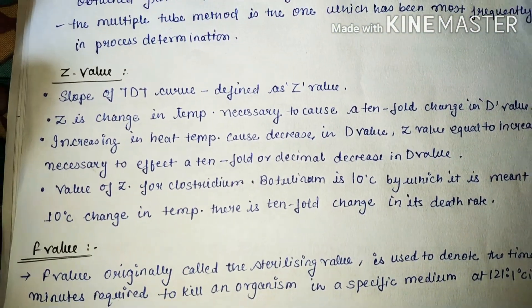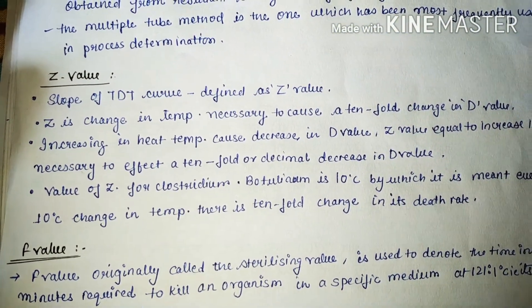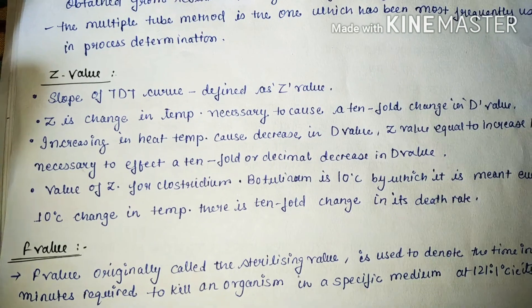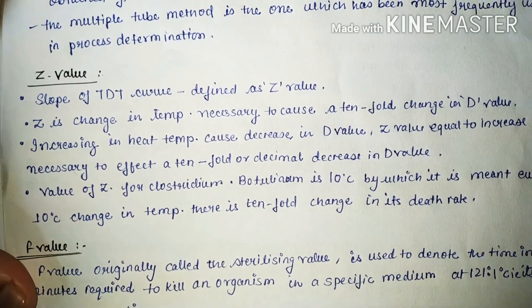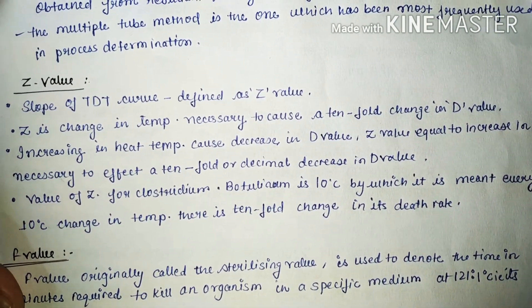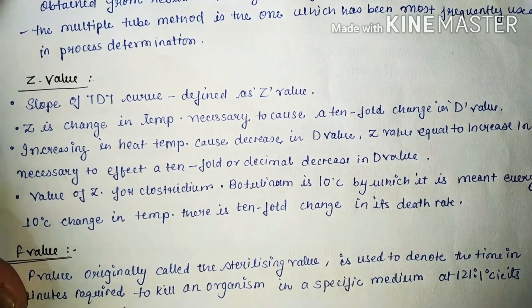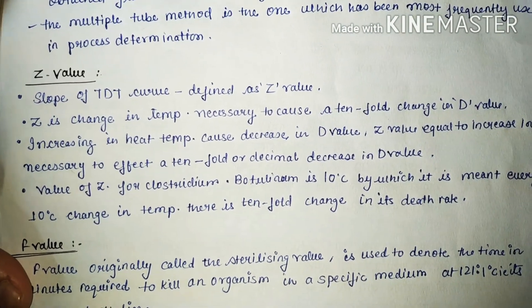What is Z value? The slope of the TDT curve is known as the Z value. Z value is a change in temperature necessary to cause a tenfold change in D value.